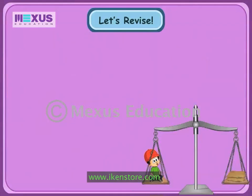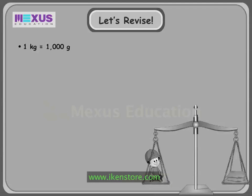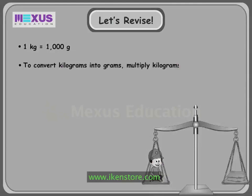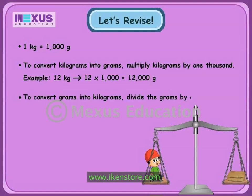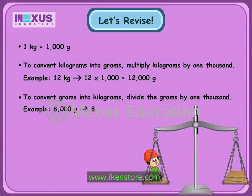Hello friends. Let's revise what we learned today. Mass is calculated in kilograms and grams. 1 kilogram is equal to 1000 grams. To convert kilograms into grams, multiply kilograms by 1000. For example, 12 kilograms will be equal to 12 multiplied by 1000, that is 12,000 grams. To convert grams into kilograms, divide the grams by 1000. For example, 8000 grams will be equal to 8000 divided by 1000, that is 8 kilograms. That's all I have for now. Bye.